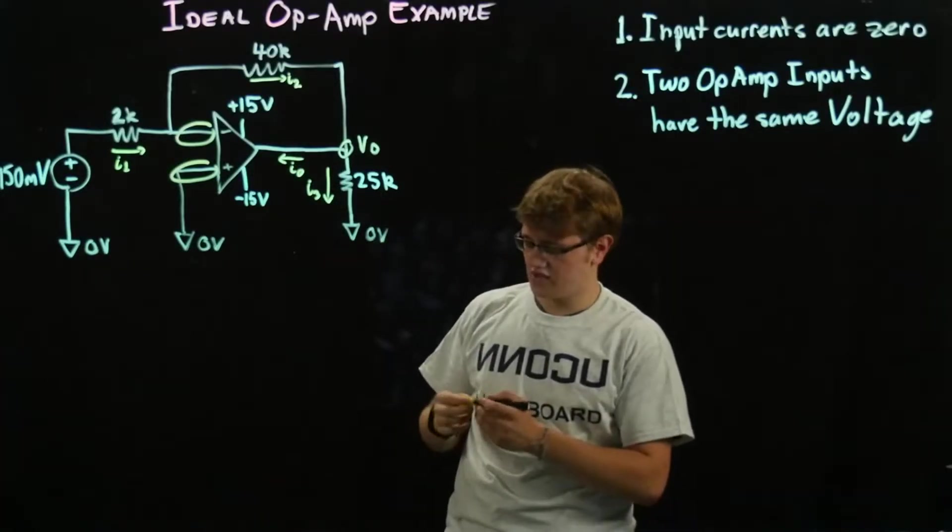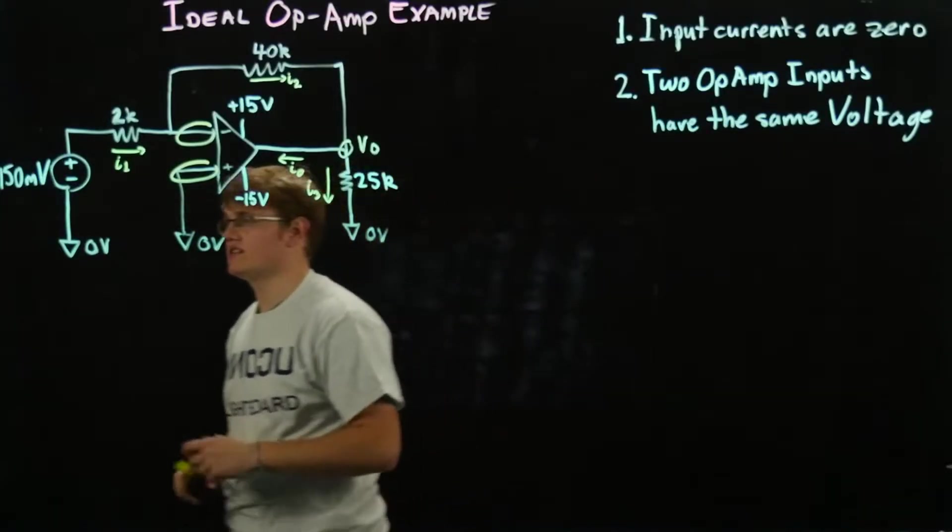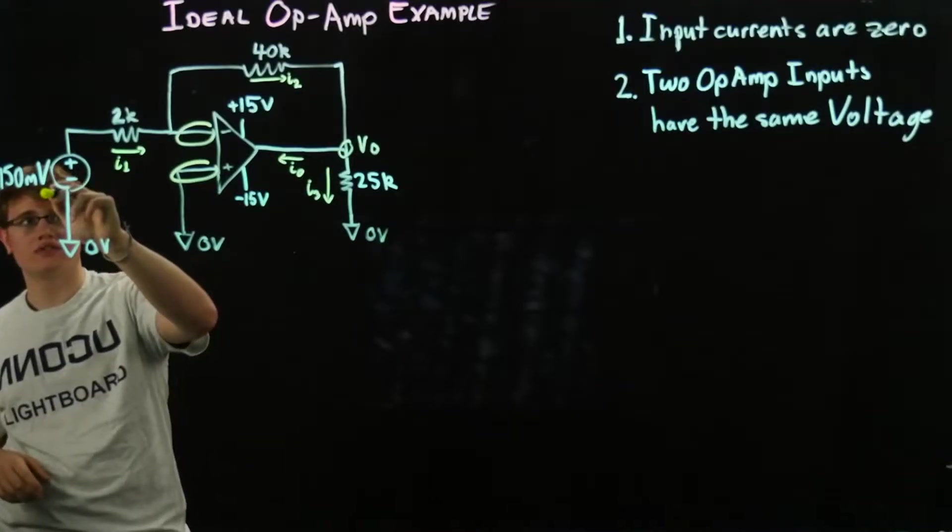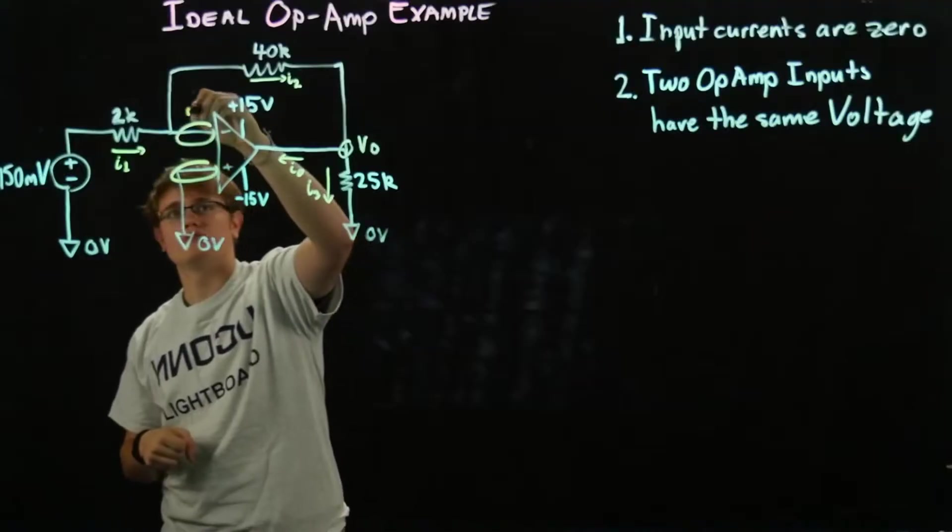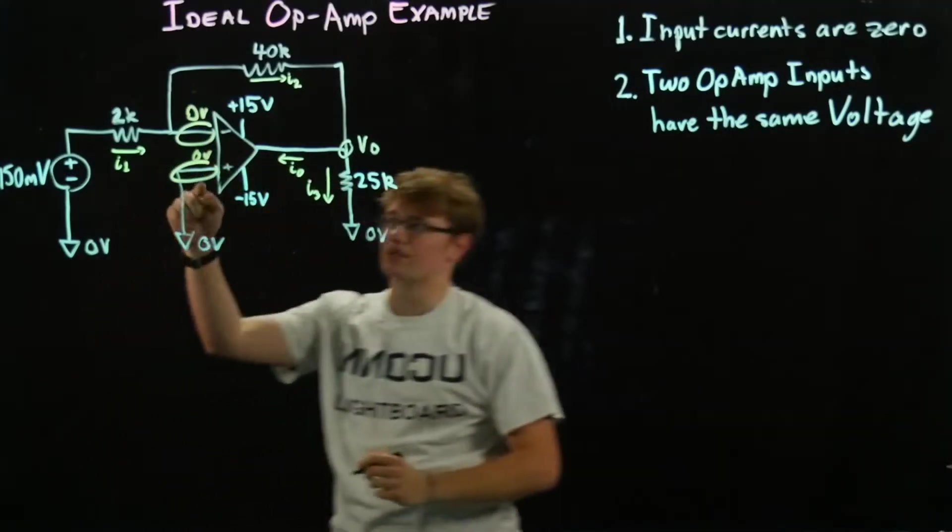So starting off, we're going to try to find I1. I1 can be calculated with this voltage source minus the voltage right here, which we know is going to be zero. So that's zero volts. Because this is zero volts, that's zero volts.